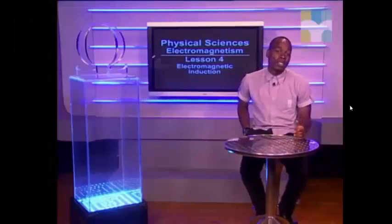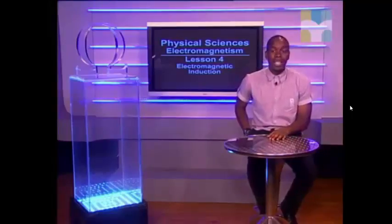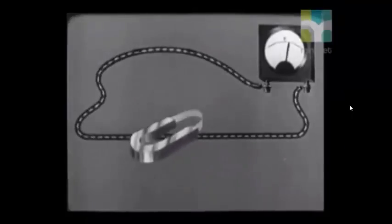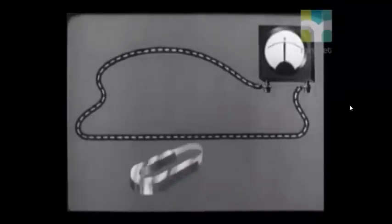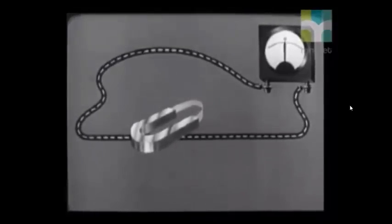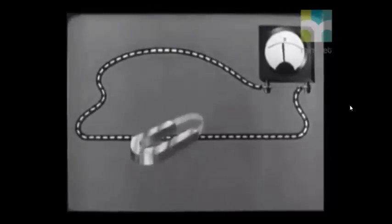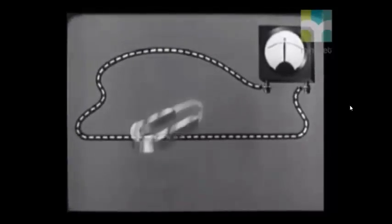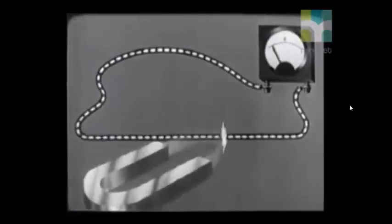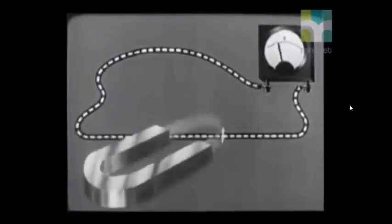Hello, Grade 11s. We will investigate electromagnetic induction today. We know that when there is a flow of charge in a wire, a magnetic field forms around the wire. Today, we will investigate to see if the opposite is possible. Will a magnetic field be able to produce a current? Before we go any further, let's talk about some terminology.